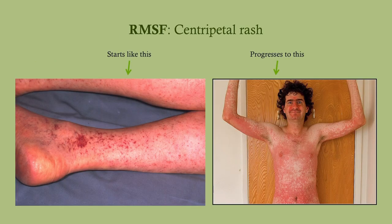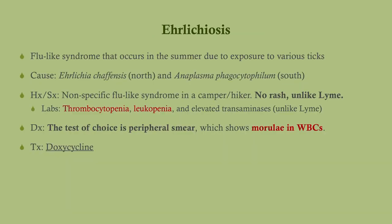This is the centripetal rash — note how it's maculopapular here and ultimately spreads to the trunk.